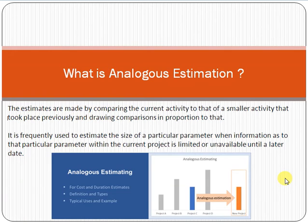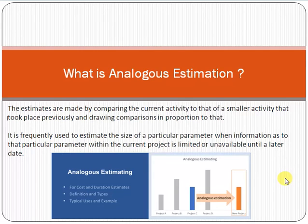You then talk with your technical leads and domain experts — this is called expert judgment. Analogous estimation is based on expert judgment. After discussion, you might decide: the older e-commerce project was done in five months; the new project is 20 percent more complex and has 20 percent more scope, so the new project will take six months and cost six thousand dollars.